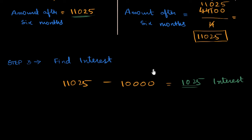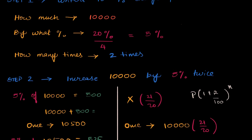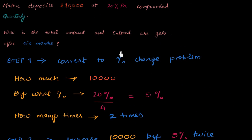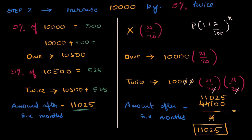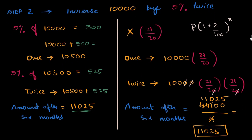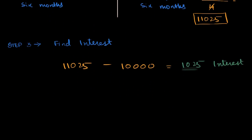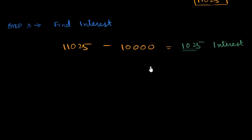No matter what the principal number is, the method remains exactly the same. To summarize the three steps: step one, convert the problem to a percentage change problem — pay particular attention to the frequency at which it's compounded; step two, actually do that percentage change calculation; and step three, find the interest. And that's it.